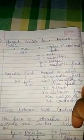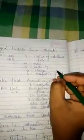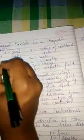Next is charge particle in a magnetic field. Charge particle in a magnetic field, so its formula is R equals MV by QB.